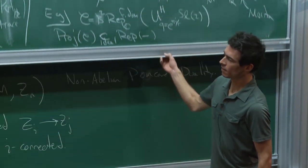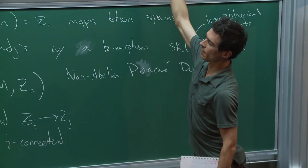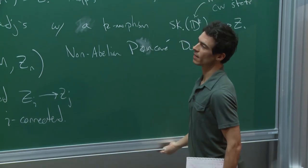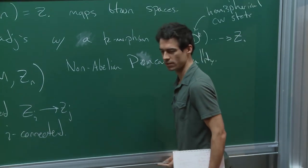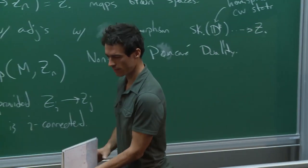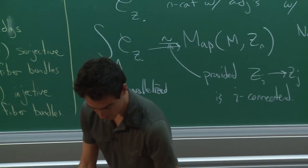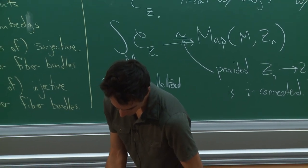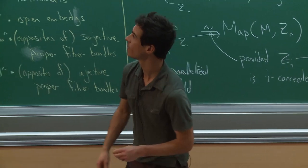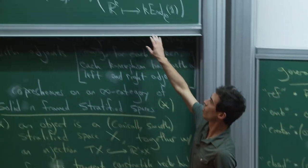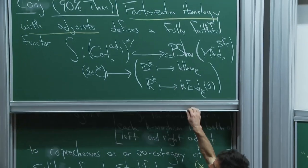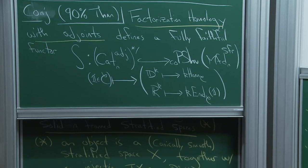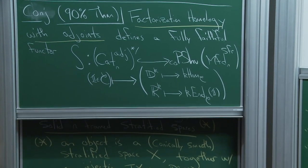That concludes the discussion of how factorization homology is related to other things you might know. What's next is to describe what the values of this construction are—first heuristically, then in more detail.